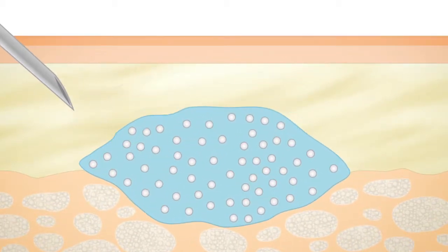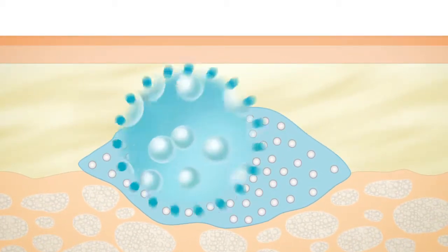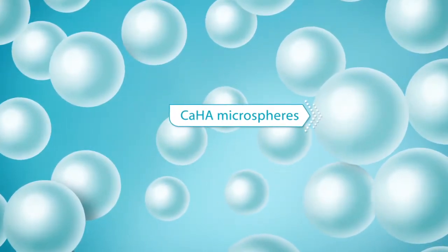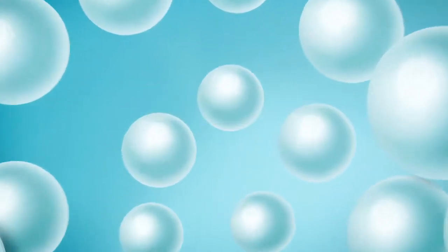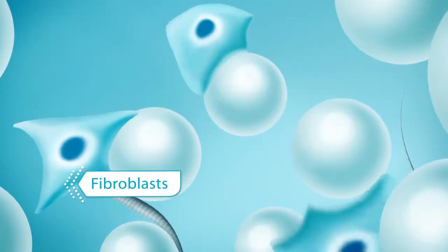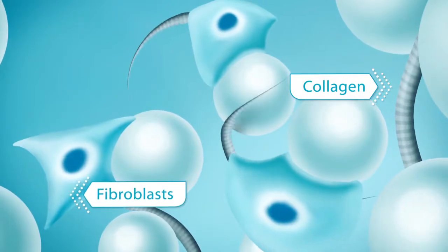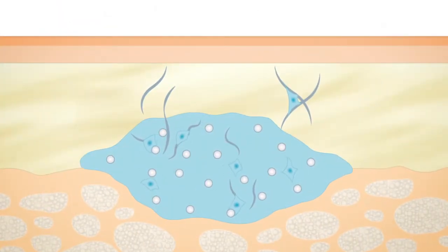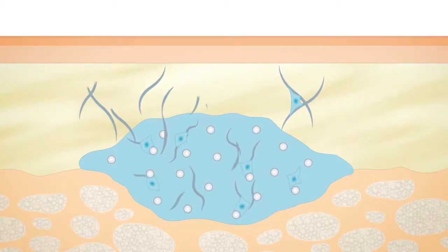It corrects the localized loss of volume. In addition, the calcium hydroxyapatite microspheres serve as a scaffold. This supportive scaffold promotes fibroblast activity and helps trigger collagen neogenesis. Over time, the newly produced collagen network strengthens tissue connectivity.